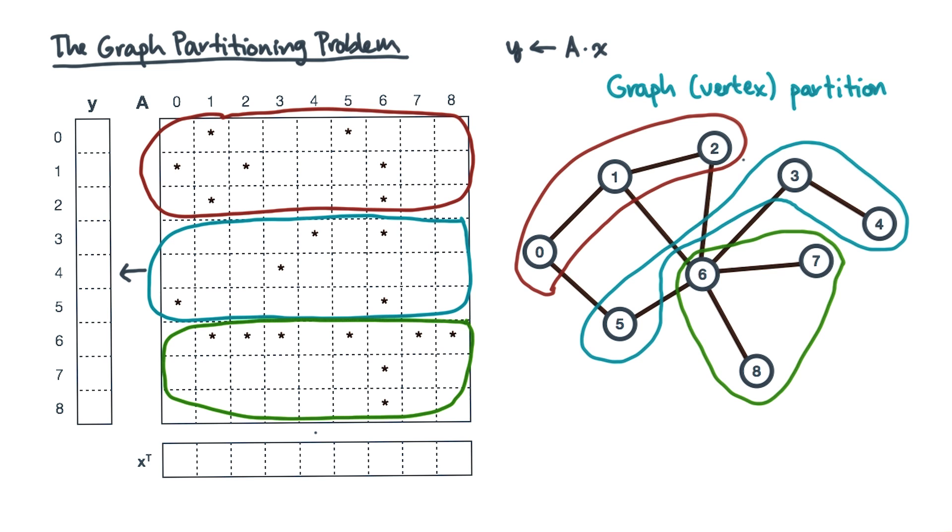Note that this assignment corresponds to a partitioning of the graph. This example is a vertex based or just vertex partition. Observe that this partitioning usually also implies a partitioning of the vectors, x and y. That's because there's a one to one mapping of vector entries to graph vertices.